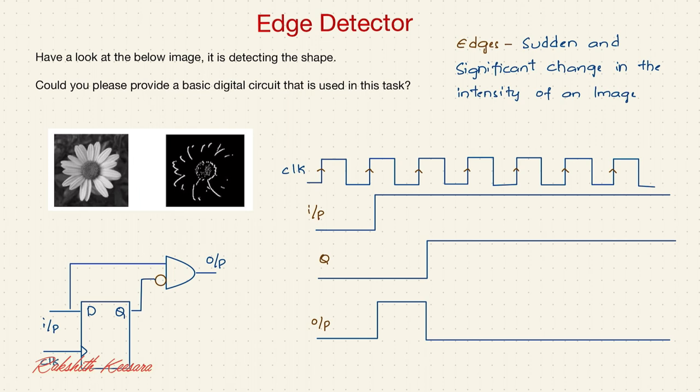So before this, let us see the definition of an edge in an image. Edge is nothing but sudden and significant change in the intensity of an image. So if you observe here, from here to here, there is a sudden change in the intensity, right? So this is an edge.